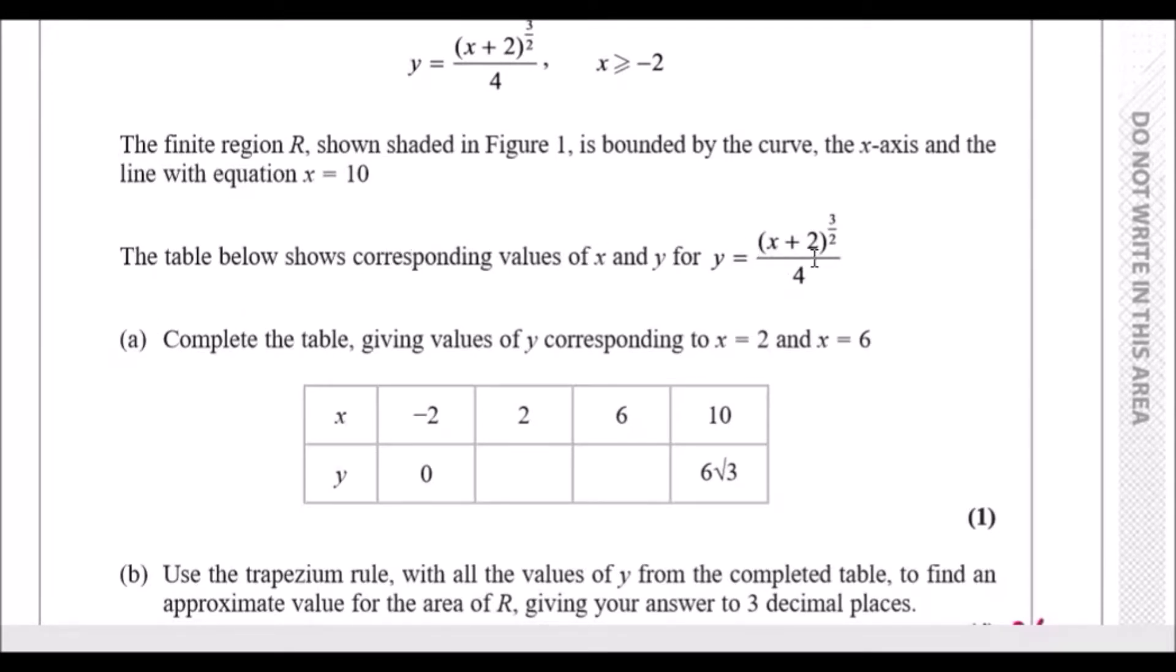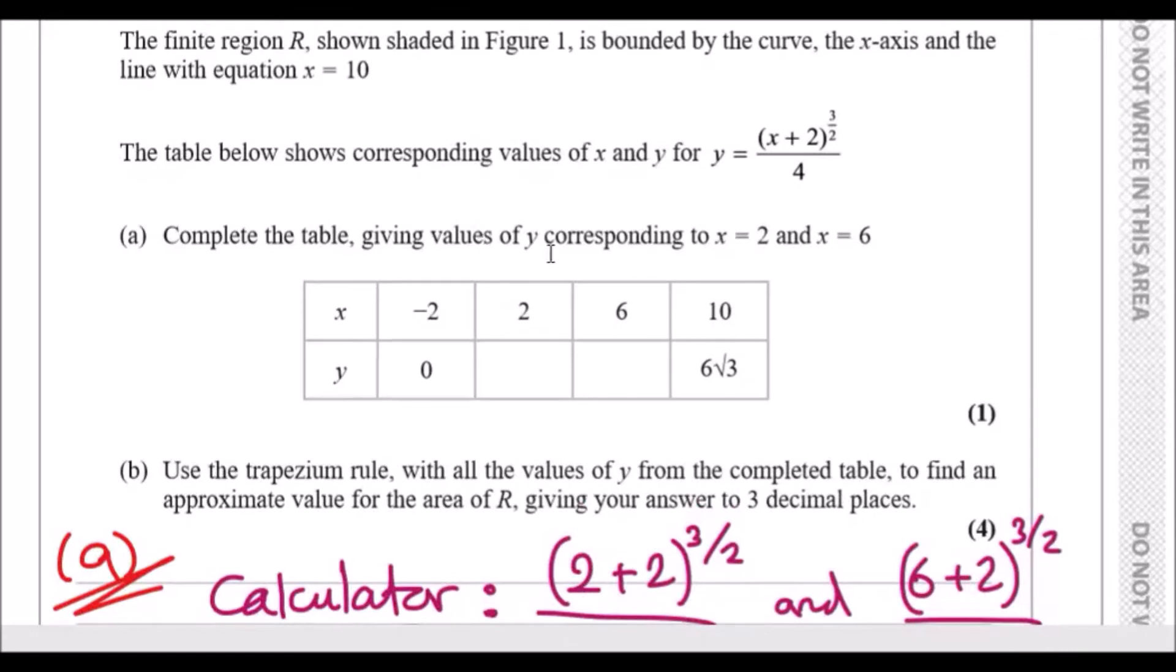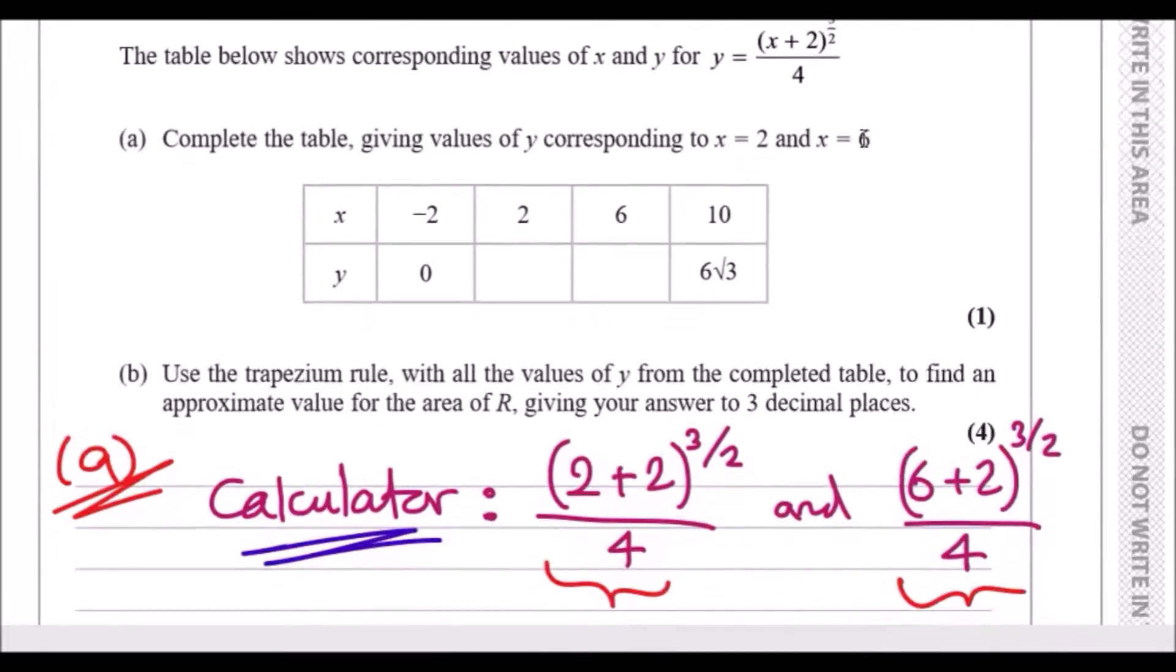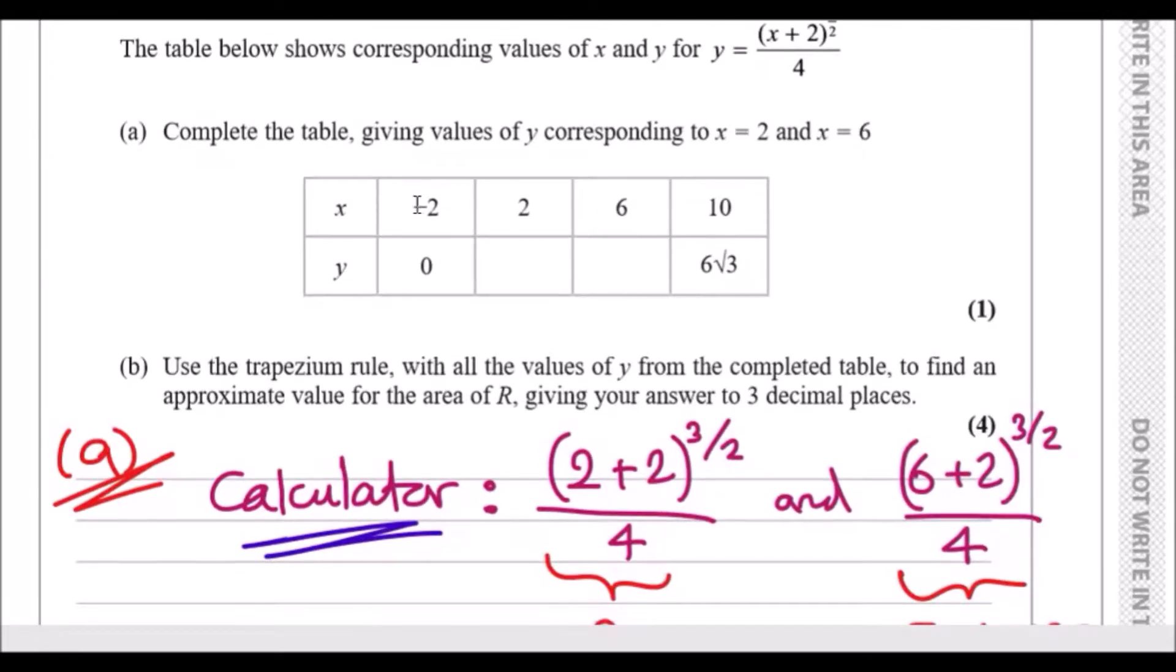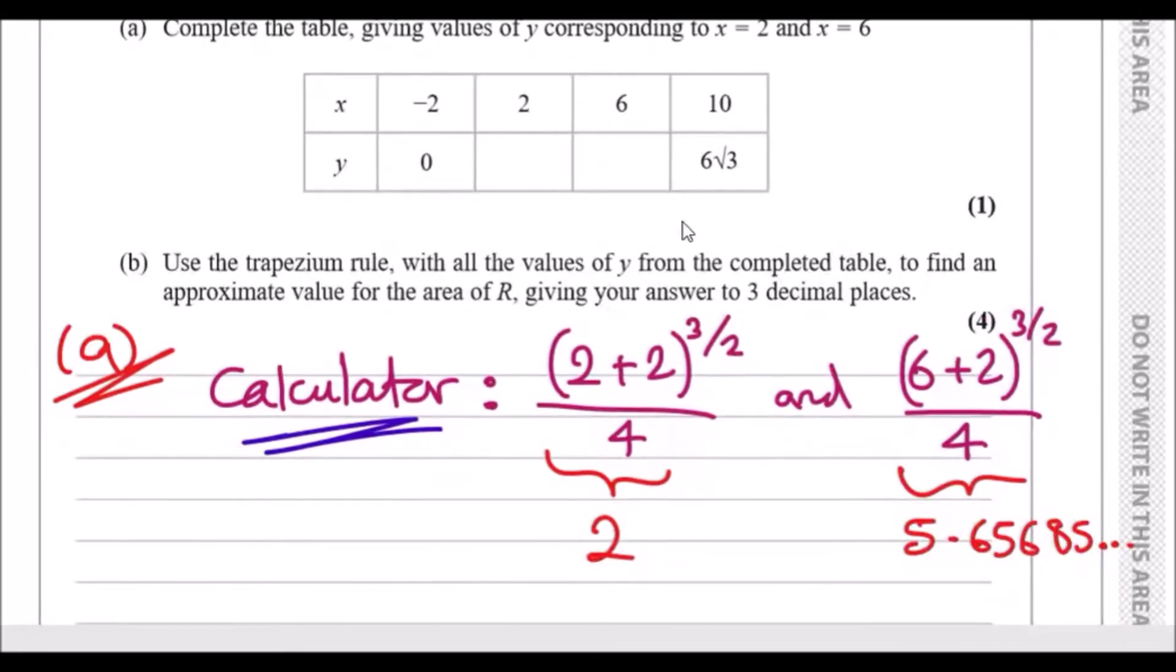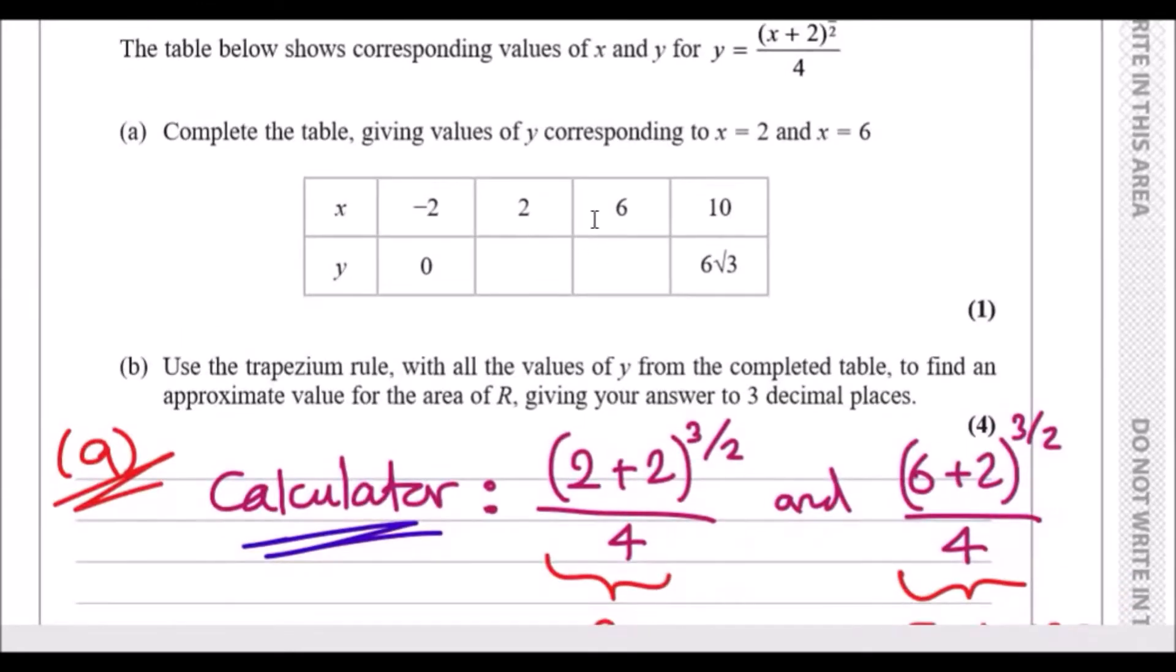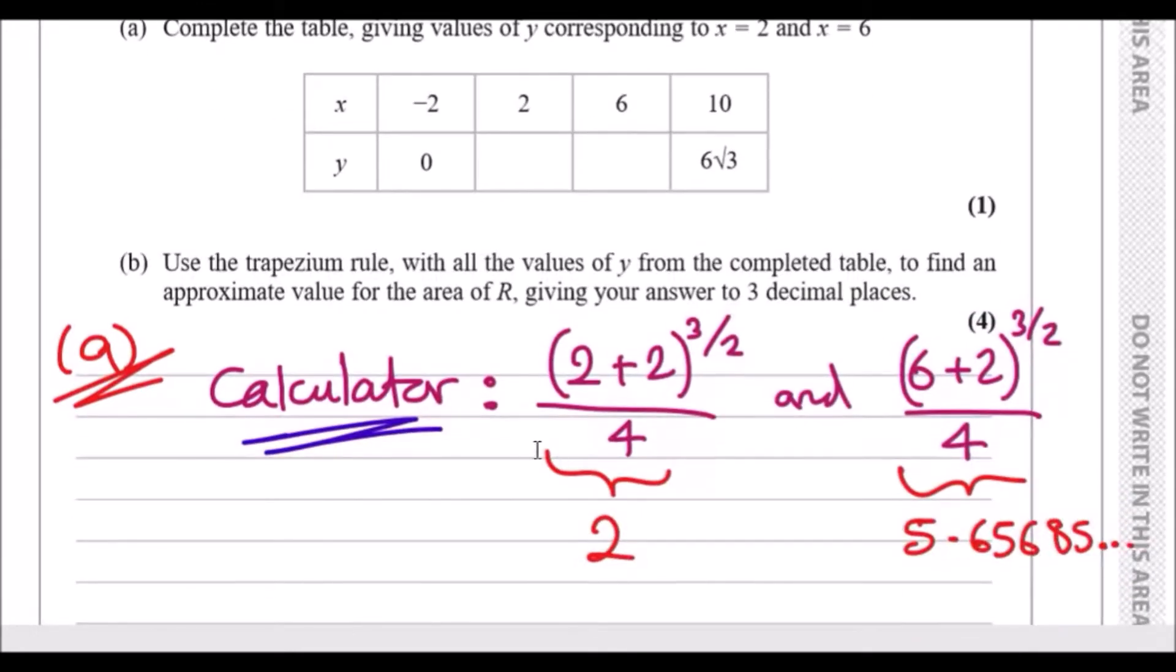The table shows corresponding values for x and y for the equation given. Part (a): Complete the table, giving values of y corresponding to x = 2 and x = 6. This one is of course dead easy, it's only worth a mark. You just plug in x = 2 to this equation and find the value for y, and x = 6. They did the exact form for one of them, so I think it's probably a good idea to find the exact form if possible. When x is 2, thankfully you get a whole number, so the answer here would just be 2.